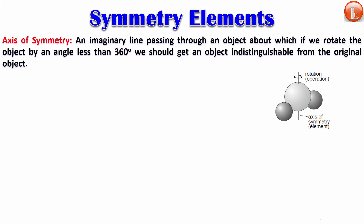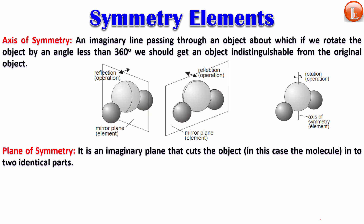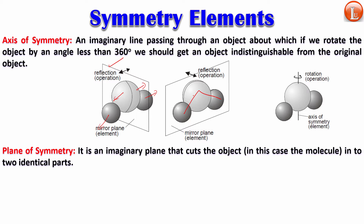The next symmetry element is called a plane of symmetry — a plane that cuts an object into two identical halves. The water molecule has two planes of symmetry: one cutting right between the oxygens giving identical halves each with a hydrogen, and another cutting through the plane of the molecule itself, since water is planar and any three atoms can be in the same plane.